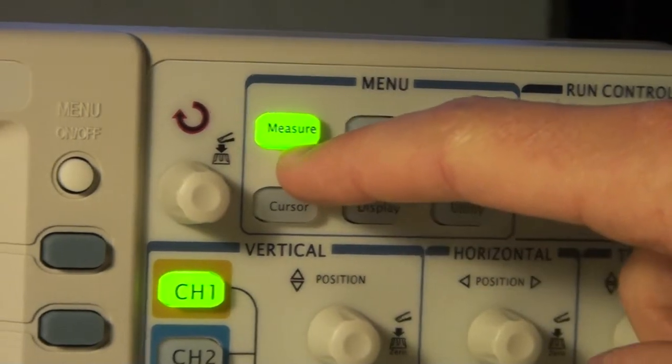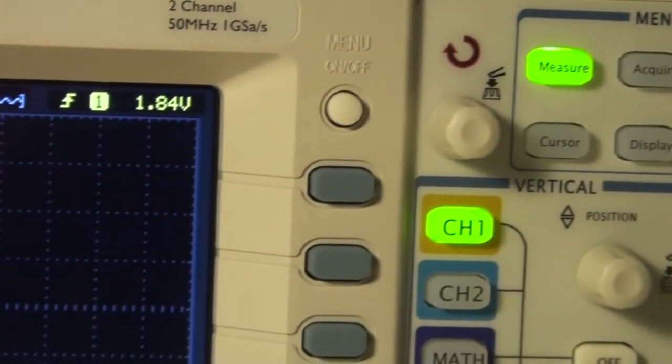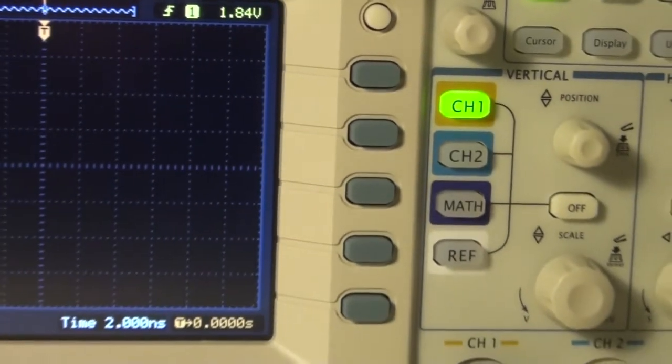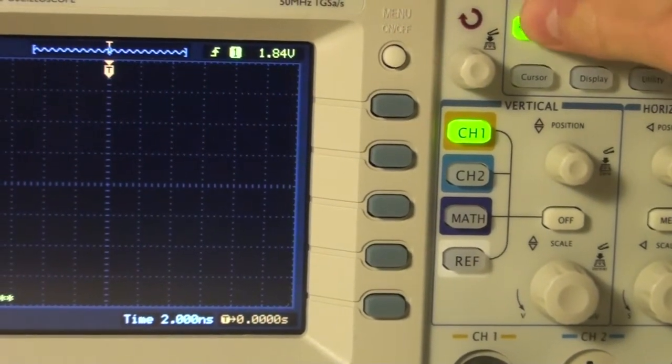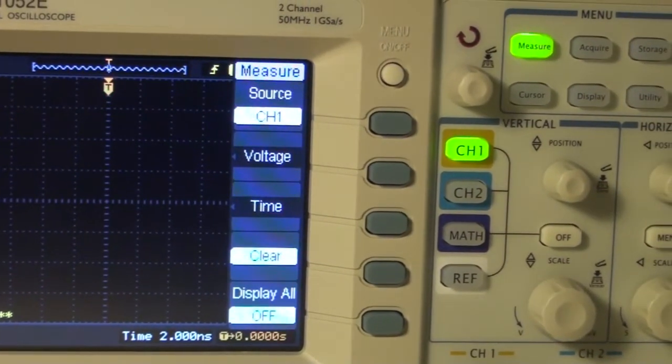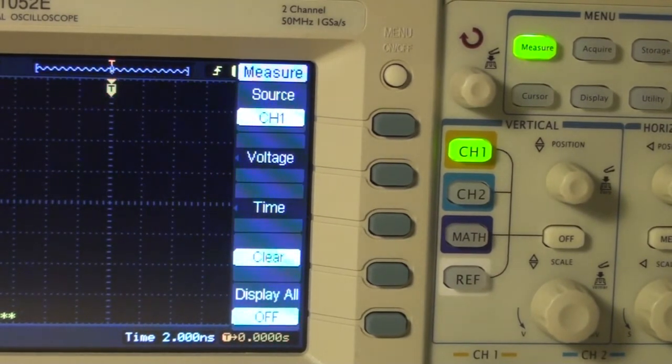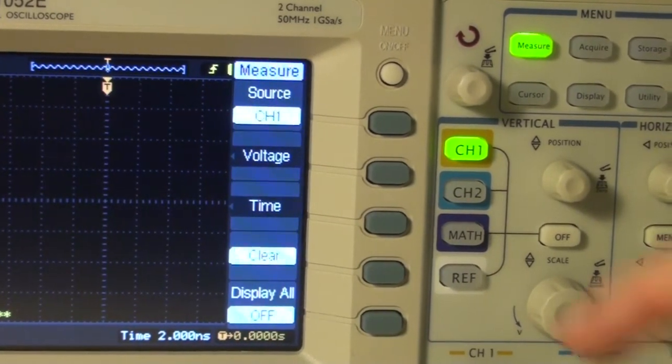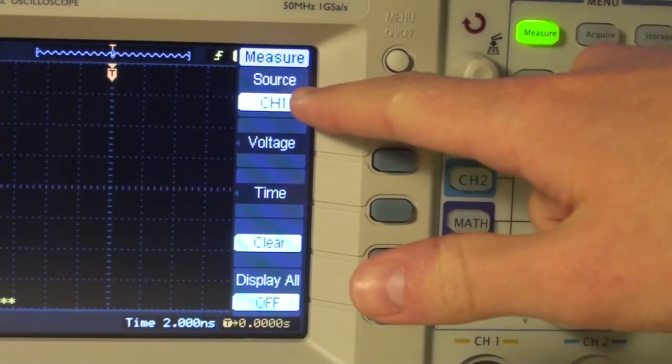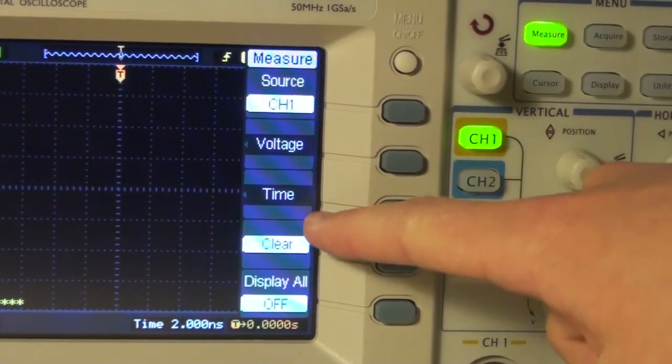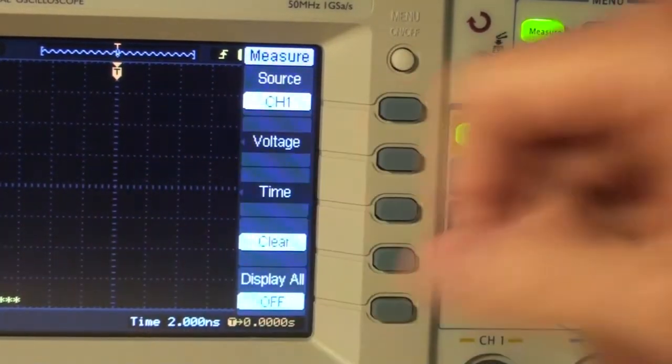Measure, when clicking that, you'll see on the screen a menu appears. This screen indicates which measure settings are enabled. Currently, our source is channel 1, and then we can go to time if we want to add the frequency setting.